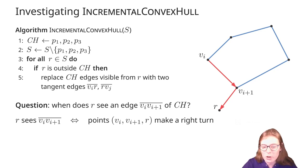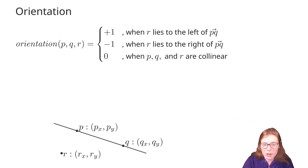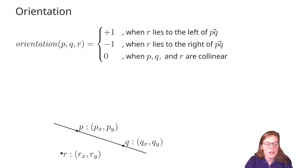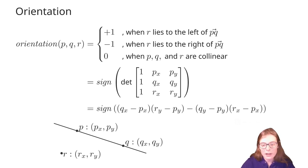So now, how can we test if three points in a given order are making a right turn? Let's define an orientation function that takes three points P, Q, and R, and it returns +1 if R lies to the left of the directed edge PQ, -1 if R lies to the right of the directed edge PQ, and 0 if the three points are collinear. For example, R lies to the right of the directed edge PQ, and thus the orientation of P, Q, and R returns -1. To compute this orientation function, we can check the sign of the determinant of the following matrix, which can be furthermore simplified to the following expression.